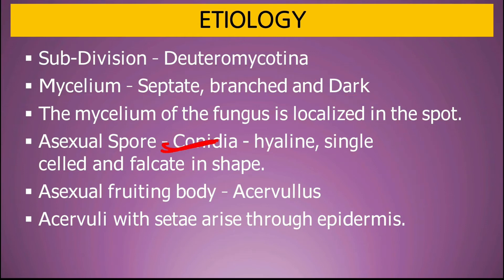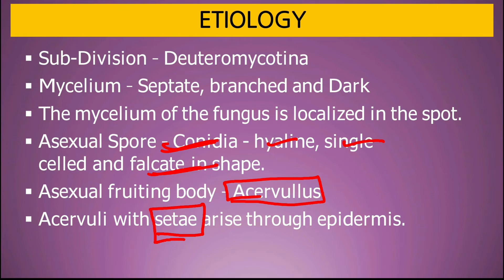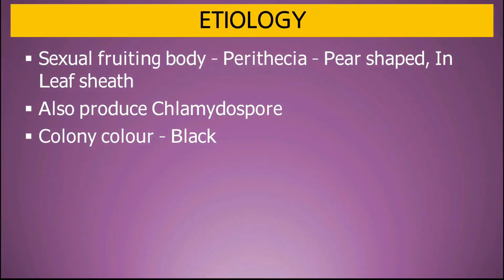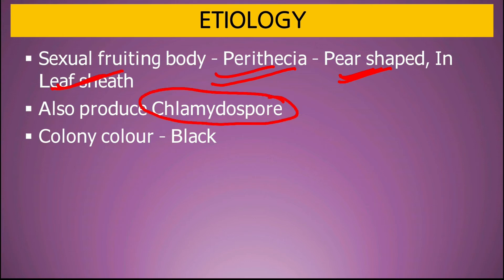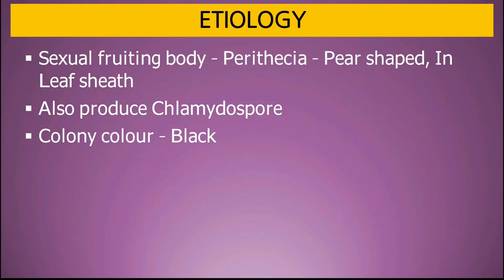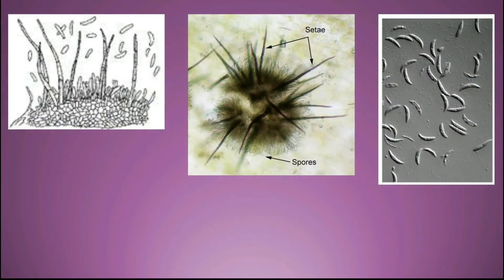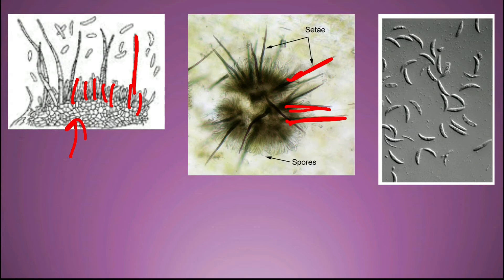Asexual spore conidia बनते हैं — hyaline, single-celled और falcate shape के होते हैं। Asexual fruiting body acervulus बनता है, जिसमें setae present होते हैं और mostly यह plant के epidermis में बनते हैं। Sexual fruiting body perithecia बनता है, जो pear-shaped होता है। Colletotrichum also produces chlamydospores, जो survival के लिए होते हैं। Acervulus में बहुत सारे conidiophores और spores बनते हैं — falcate shape के।